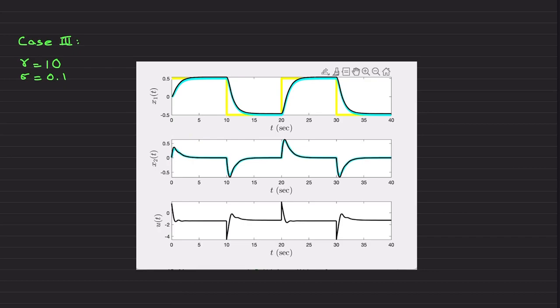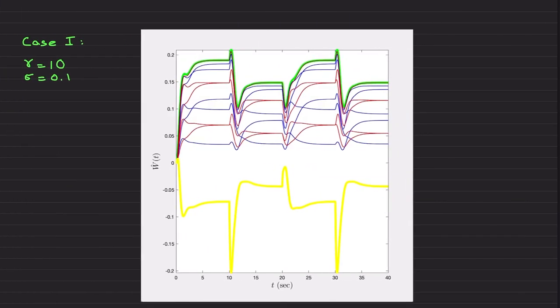Which is expected theoretically from the universal neural networks universal function approximation theorem and this is the numerical illustration, nothing else. Theory and numerical simulation consistent with each other which is the happy ending. I would like to show you some details right now.